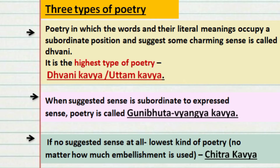The first type is Dhvani Kavya or Uttam Kavya — poetry in which the words and their literal meanings occupy a subordinate position and suggest some charming sense or Dhvani. Here, the Vajhyartha or literal meaning is given a subordinate position, and the Vinyartha or suggested meaning is given much more importance. Thus it is called the highest type of poetry. In Guni Buddha Vyengya Kavya, Dhvani is present but subordinate to the literal meaning, so it is not as good. Finally, in Chitra Kavya, there is no suggested sense at all — no Dhvani — so this is the lowest kind of poetry.